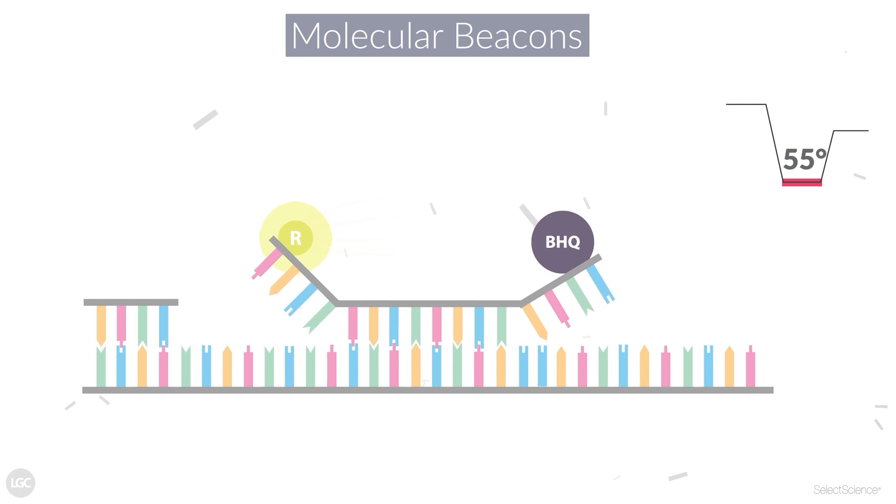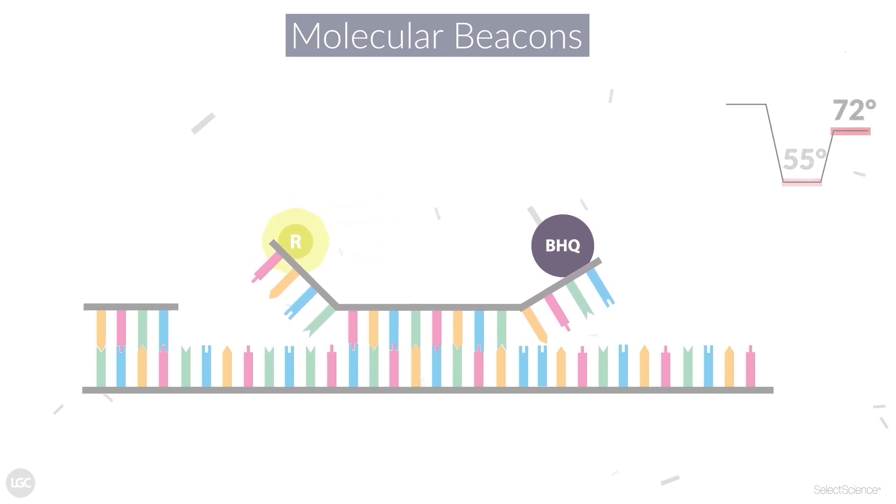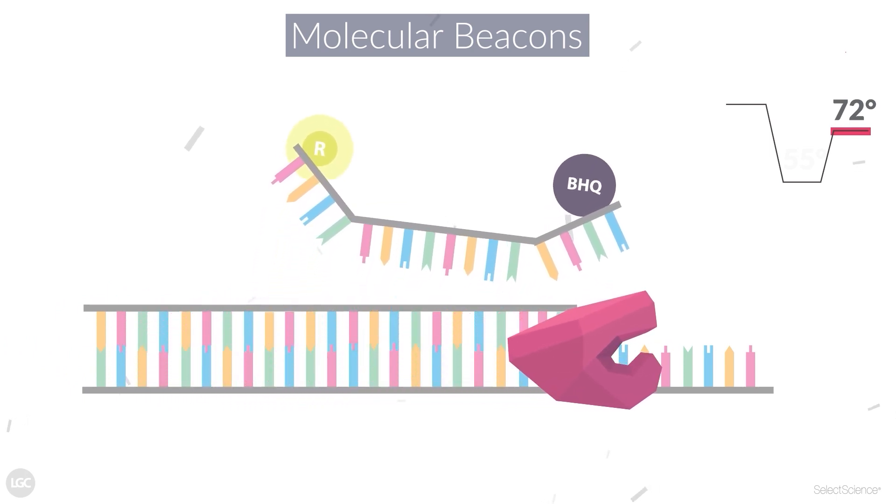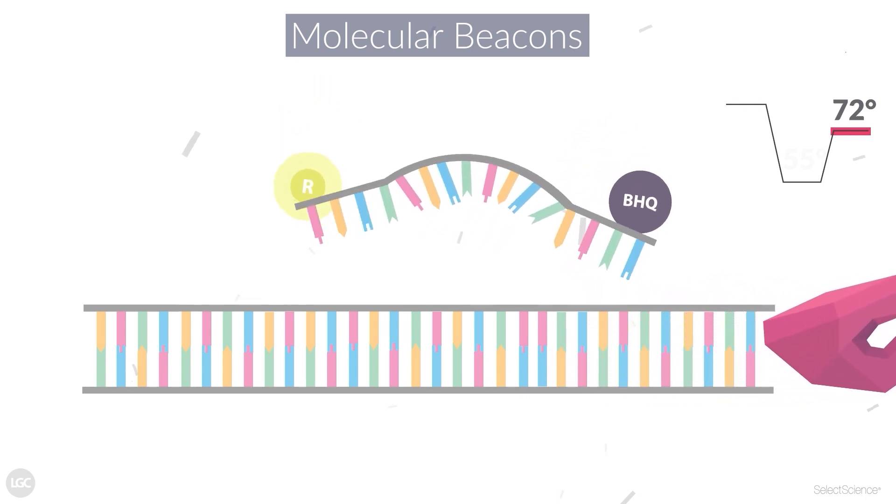Finally, the temperature is increased for optimum extension by the polymerase, allowing the intact molecular beacons to dissociate and reform their hairpin structures, quenching fluorescence as the next round of target amplification takes place.